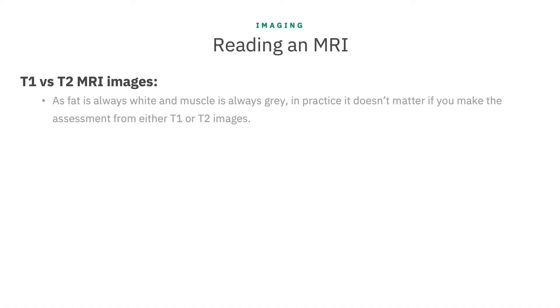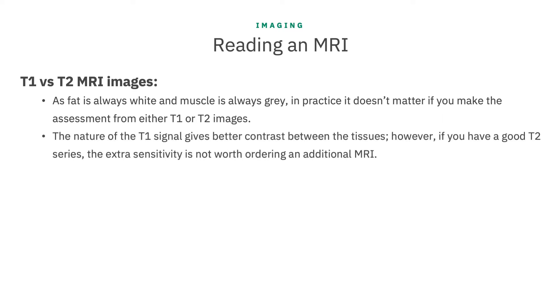For the purposes of this interpretation, what we are really trying to do is measure the multifidus and then determine the extent of degenerative changes and fatty infiltration in the muscle. As fat is always white and muscle is always gray, in practice it doesn't matter much if you make the assessment of the multifidus from either T1 or T2 weighted images. If you have the choice, the nature of the T1 signal gives better contrast between the tissues we're investigating.